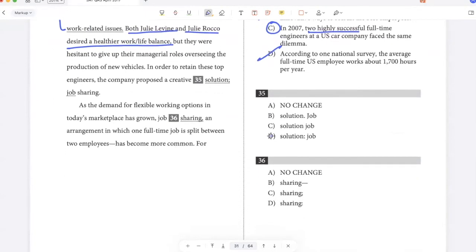In order to retain these top engineers, the company proposed a creative solution, job sharing. So here I'm saying the company proposed a creative solution and what that solution was, was job sharing. So a colon makes sense here, because a colon sets up expectation for what has to come next. So D should be the answer. A semicolon should have an independent sentence on either side. So that's not correct because job sharing is not a sentence.